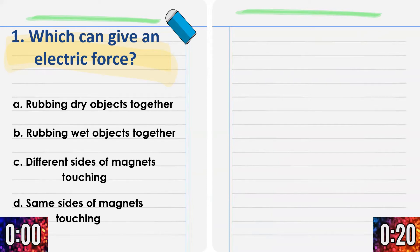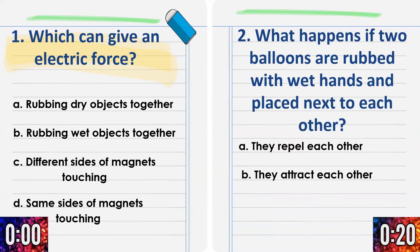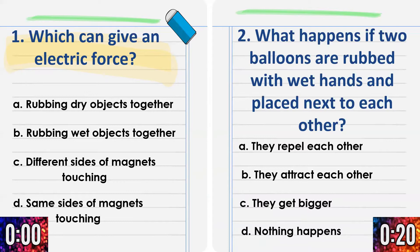Let's proceed to number 2. What happens if two balloons are rubbed with wet hands and placed next to each other? A) They repel each other. B) They attract each other. C) They get bigger. Or D) Nothing happens. Circle your answer now. Take note that the balloons are wet.